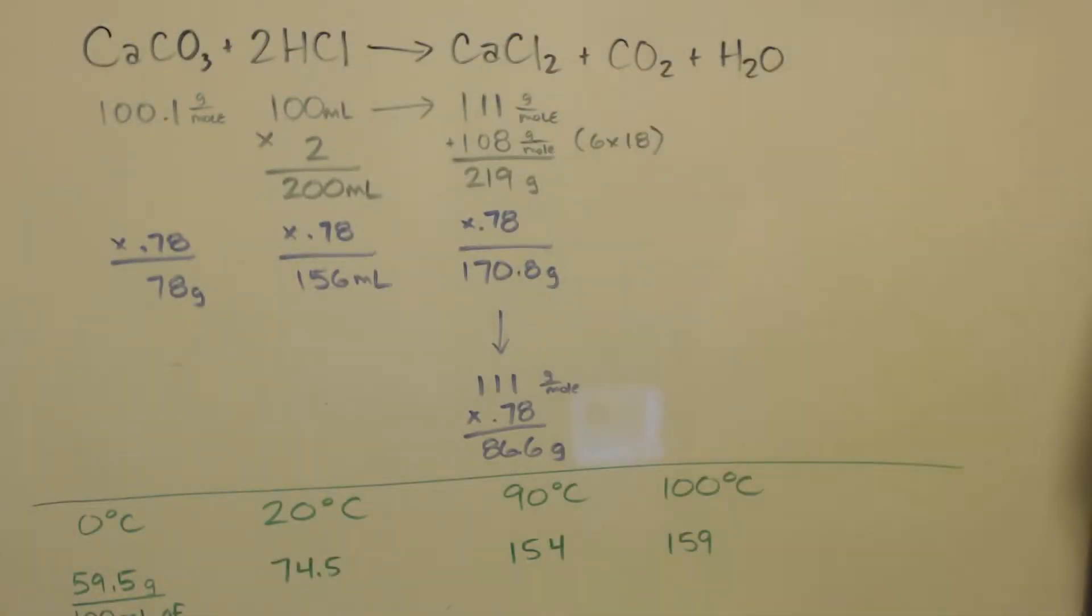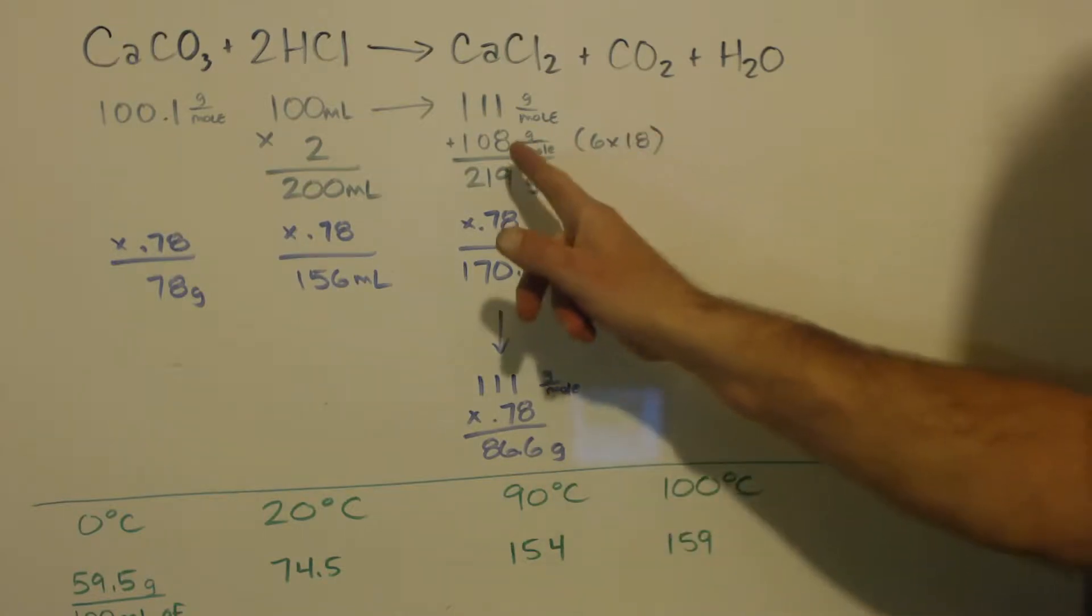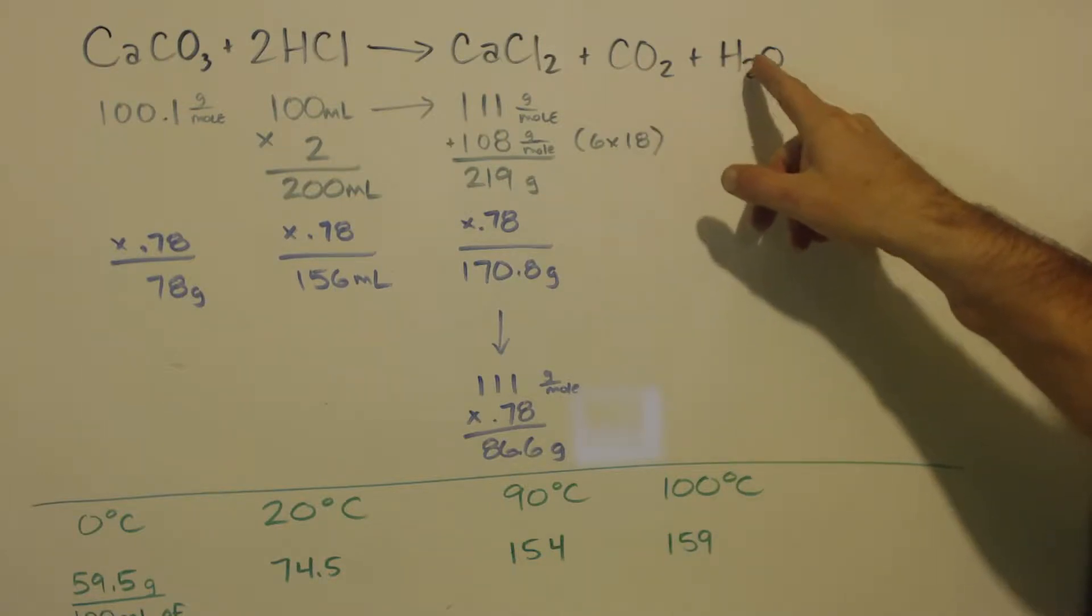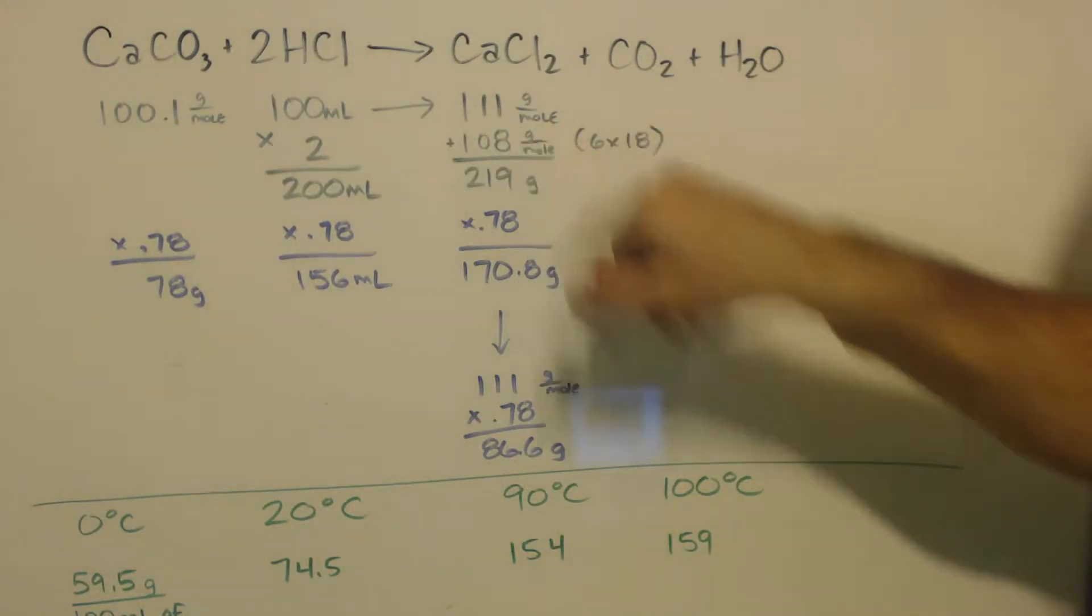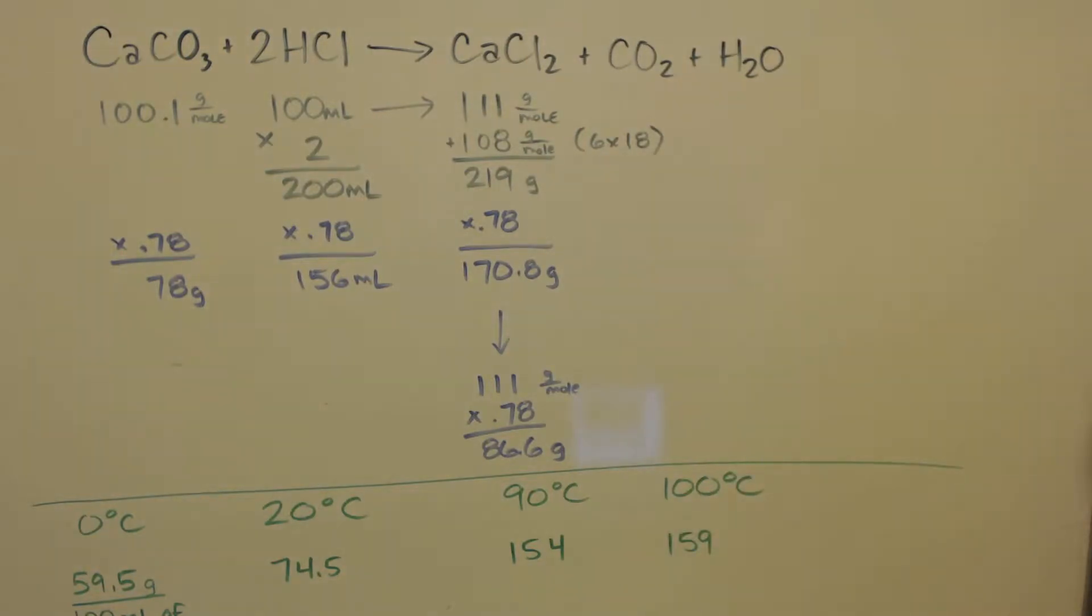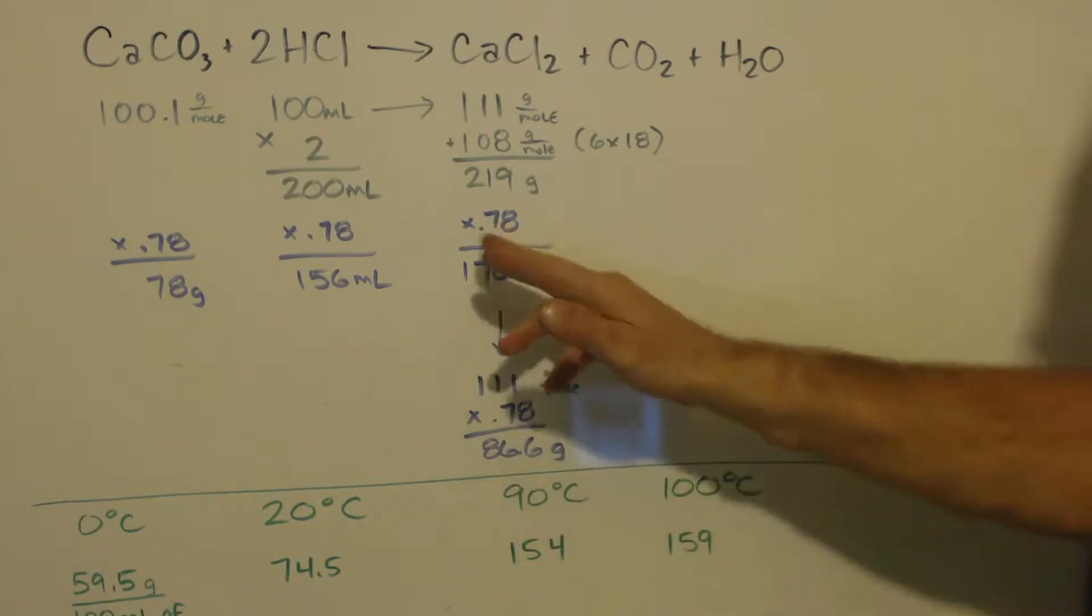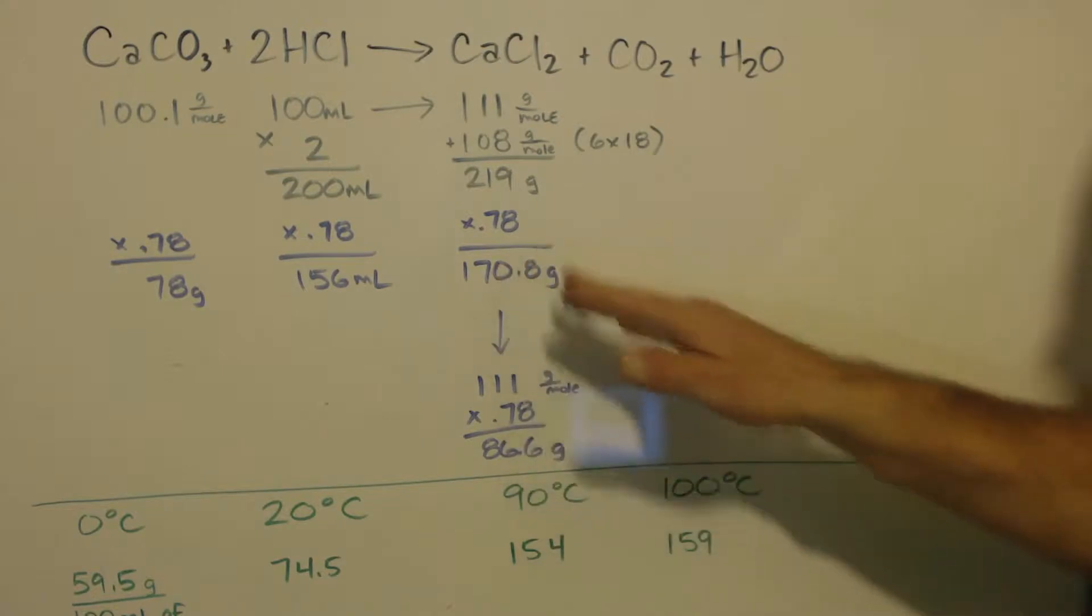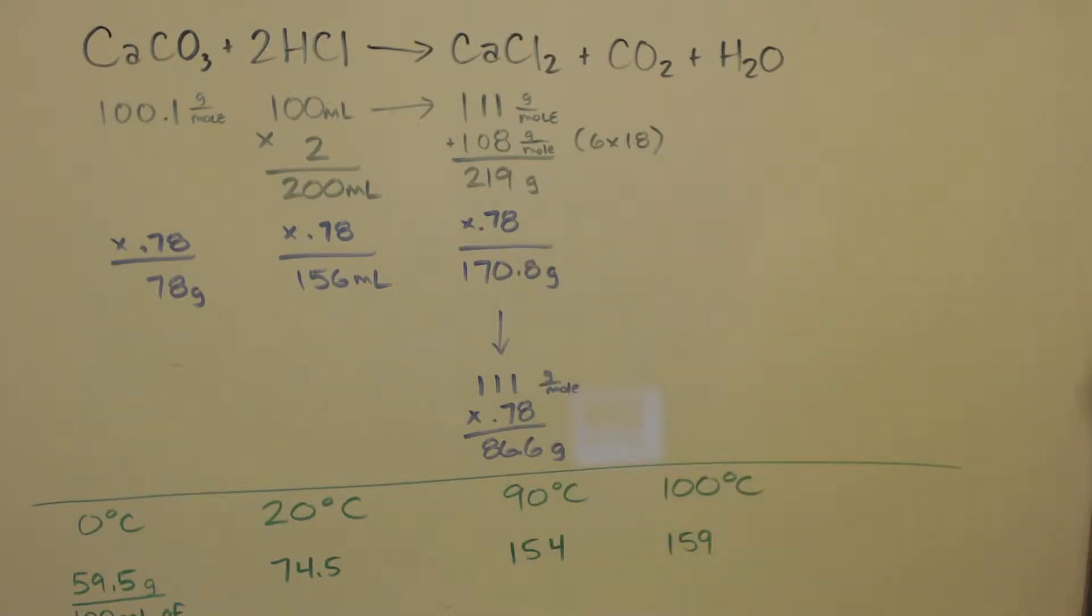I'm gonna make 111 grams of calcium chloride. It comes as a hexahydrate, so there's six water molecules. Six times 18, which is the molar mass of water, is 108 grams. That's 219 grams total: 111 for the calcium chloride and 108 for the water hydrate. Times my 0.78, I should make 170.8 grams of calcium chloride hexahydrate.